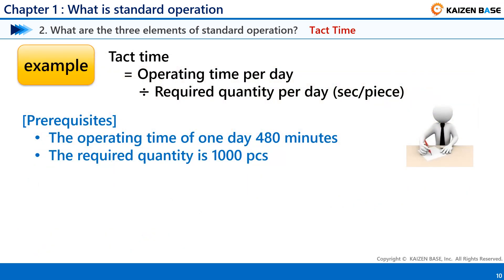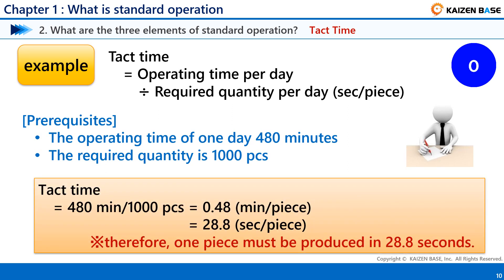Now let's calculate the Takt Time using an example. The prerequisites are: operation time of one day is 480 minutes, and the required quantity is 1,000 pieces. Please calculate in 10 seconds. The correct answer: in this example, the Takt Time is approximately 28.8 seconds, meaning it is necessary to make one piece in this time. Since extra incidental work may occur, the actual cycle time must be set shorter. However, it is important to improve incidental work to make it closer to the Takt Time.